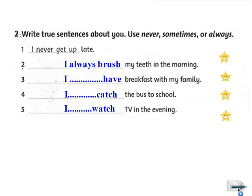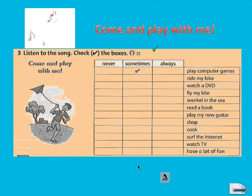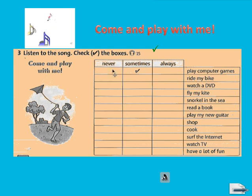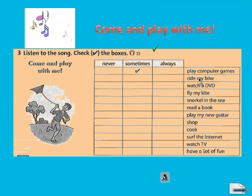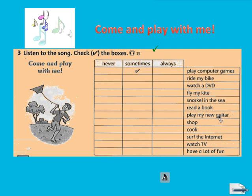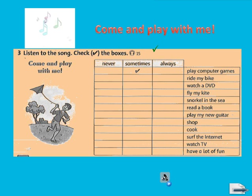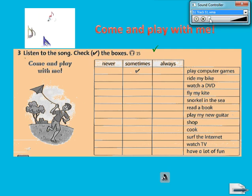Now we turn to exercise 3 — the song 'Come and Play with Me'. You will listen to the song and then put a tick mark for never, sometimes, or always for each activity: play computer games, ride my bike, watch a DVD, fly my kite, snorkel in the sea, read the book, play my new guitar, shop, cook, surf the internet, watch TV, have a lot of fun. Now listen to the song and check the boxes.